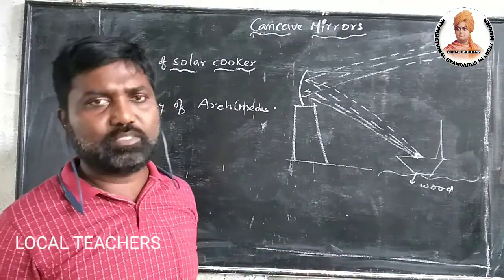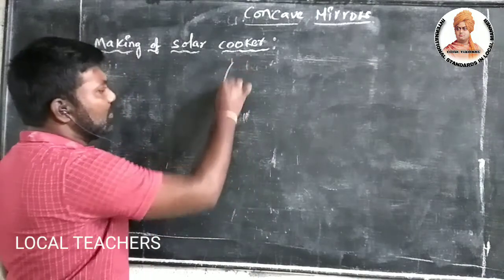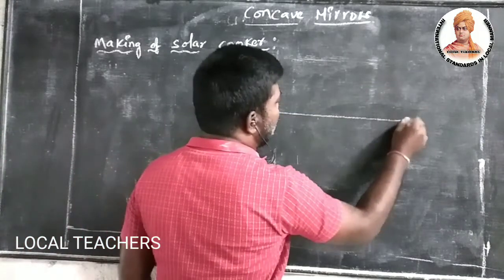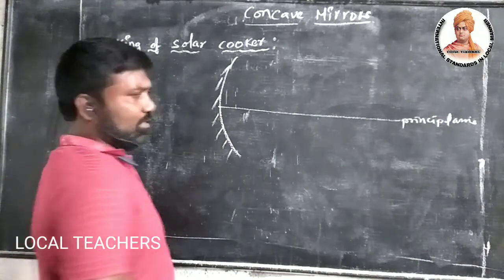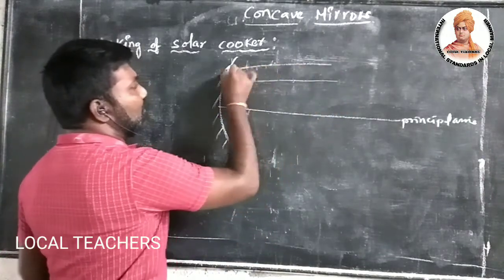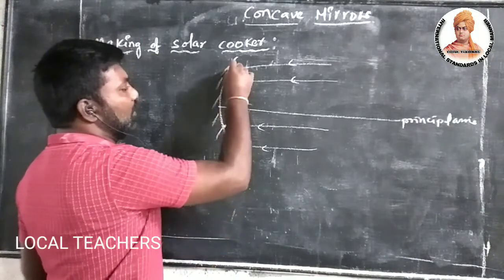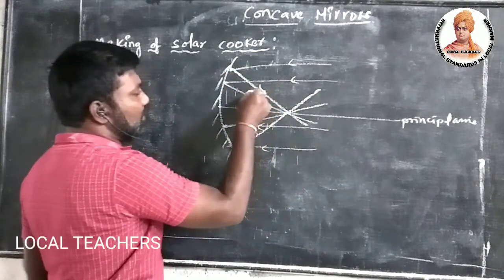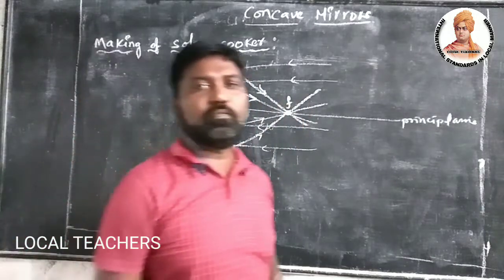Generally, we know that Archimedes used concave mirrors. The general property of a concave mirror: the outer surface is rough, the inner surface is smooth. This is the principal axis. When we place the concave mirror in front of sunlight, the incident rays come and fall on the concave mirror. All the incident parallel rays reflect and pass through a common point, called the focus F.